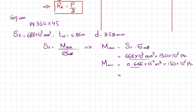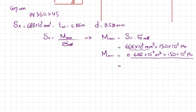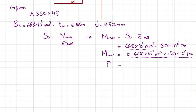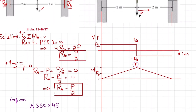From the bending moment diagram, the maximum bending moment equals P. Equating this to the calculated M_max and solving gives P = 103,200 N, or P = 103 kN. This means a load of 103 kN can be applied.